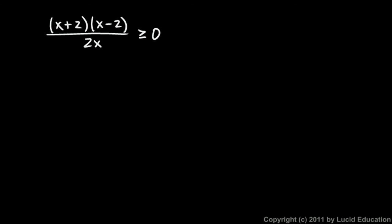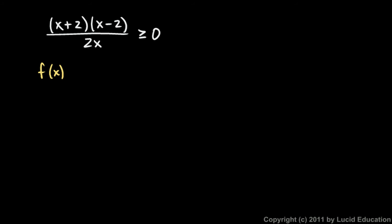Here's another rational inequality. We have x plus 2 times x minus 2 over 2x. When I look at this, I see the numerator is factored, and I see three things here: the x plus 2, the x minus 2, and the 2x. Those three things are significant.